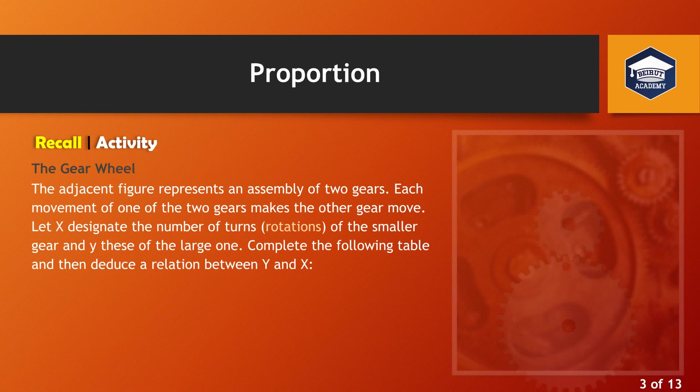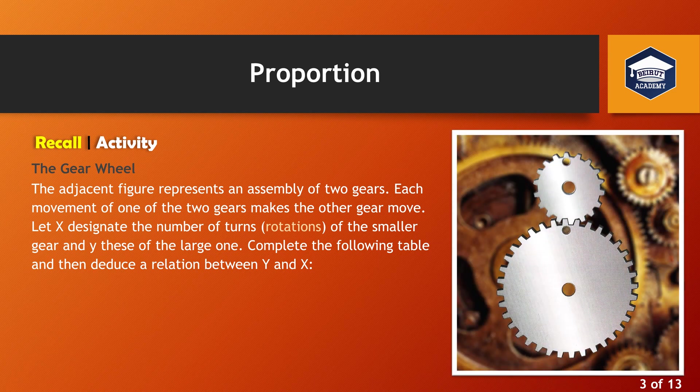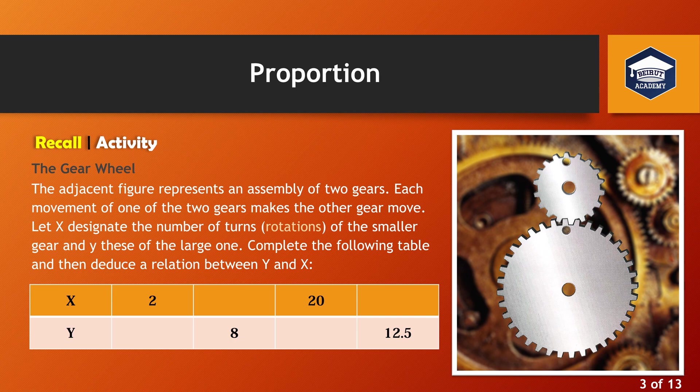The gear wheel. The adjacent figure represents an assembly of two gears. Each movement of one of the two gears makes the other gear move. Let x designate the number of turns of the smaller gear and y these of the large one. Complete the following table and then deduce a relation between y and x.